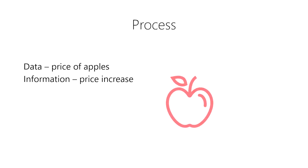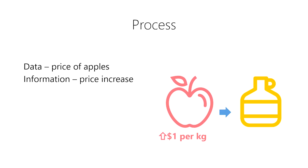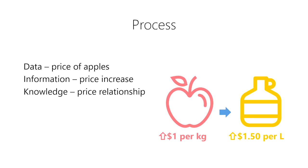Then, from many years of observation, we've learned that when the price of apples goes up by $1 per kilogram, the price of apple cider will likely rise by $1.50 per liter in the following month. We acquired knowledge when we learned about the relationship between an increase in the price of apples and an increase in the price of apple cider.